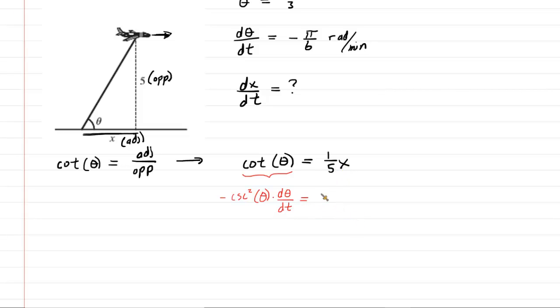Over here we have 1 fifth x. Again, we're doing the derivative with respect to time. The derivative of 1 fifth x would just be 1 fifth, but then we have to employ the chain rule and multiply by the derivative of x with respect to time. So that would be the correct derivative right there.